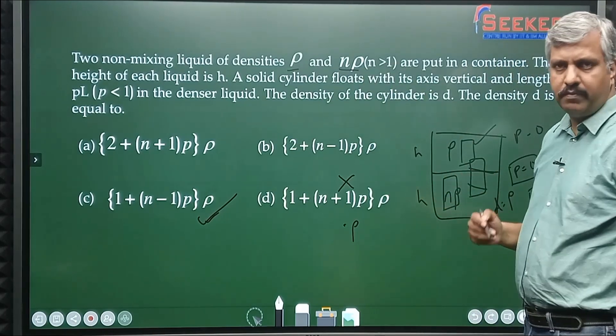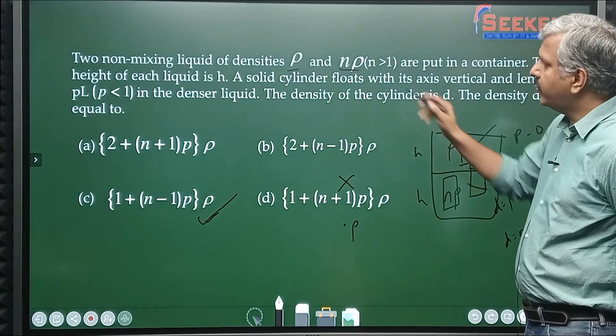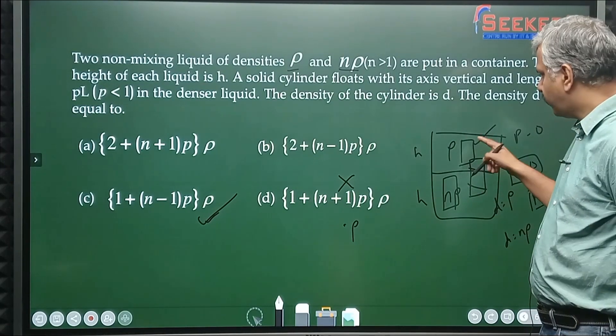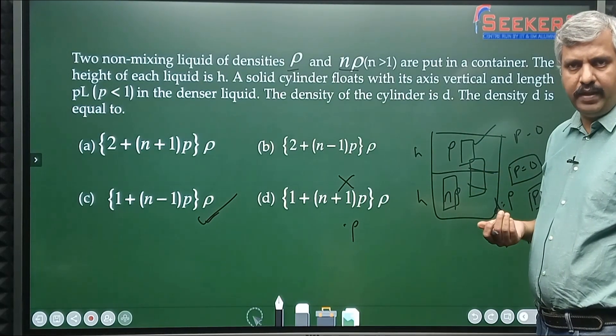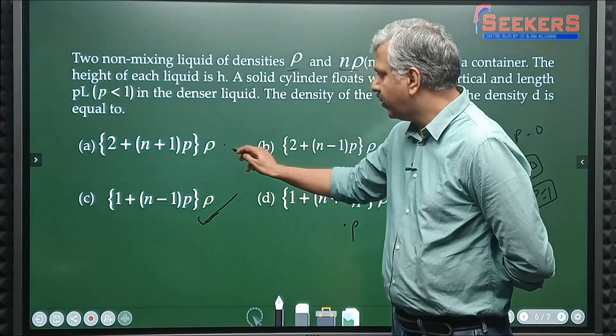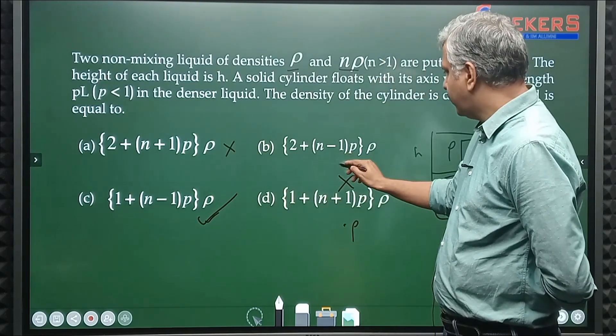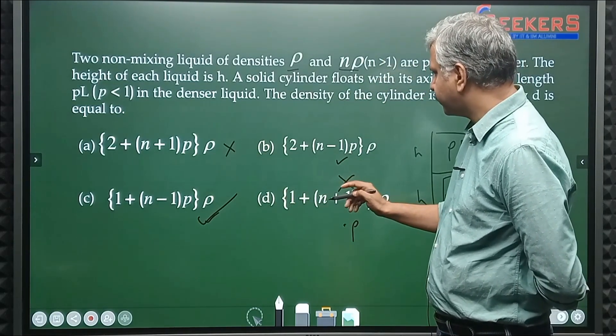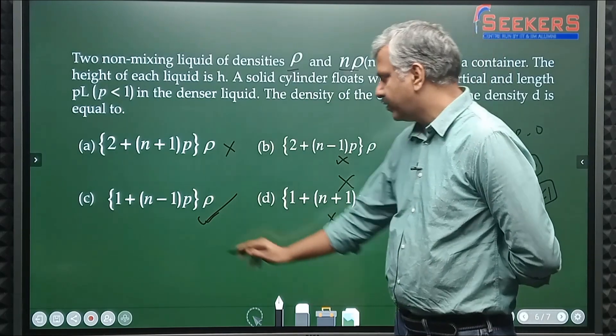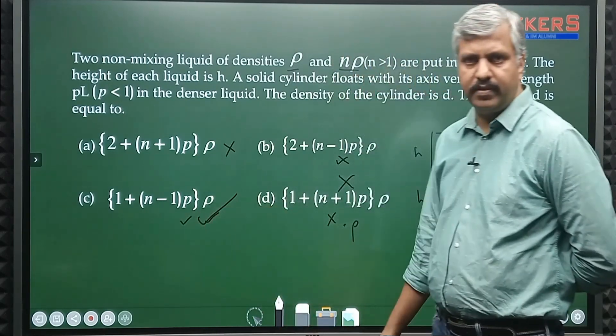There's another method for this. Suppose n was 1. So if n was 1, then the body is floating in a liquid of density ρ, so d must be equal to ρ. If I put n equals 1, this will not give me the answer, this gives me the answer, this also does not give me the answer, this also does not give me the answer. Only this one will give me the answer. So even with that kind of substitution you can do.